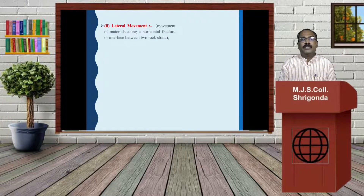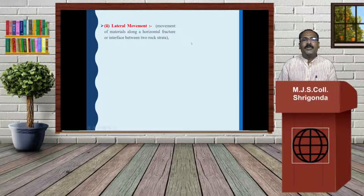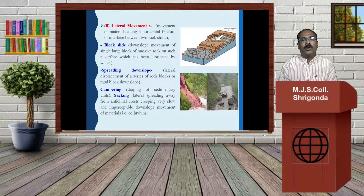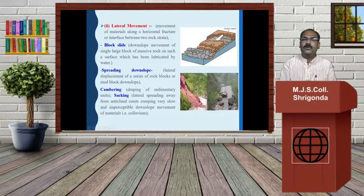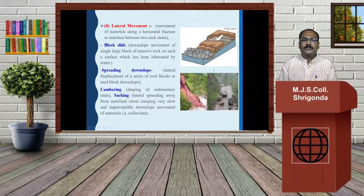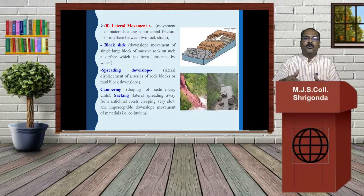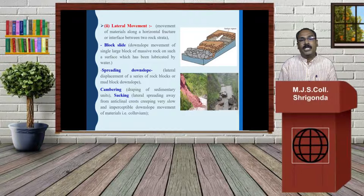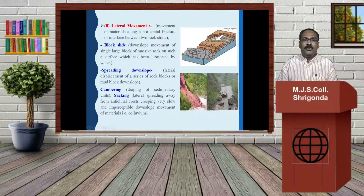Then the lateral movements — horizontal. Lateral along the horizontal features of interface between two rock strata, block slides, downslope movements of blocks or rocks sliding. Massive rocks on such a surface which has been lubricated by water, spreading downslope — lateral displacement of a series of rock blocks downslope, comparing downslope of the sedimentary units.